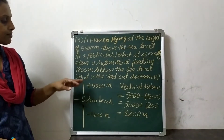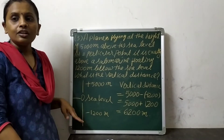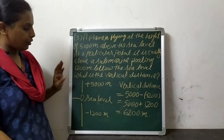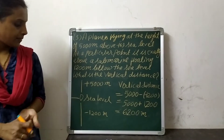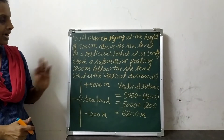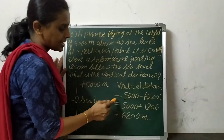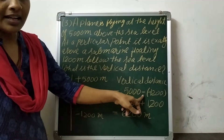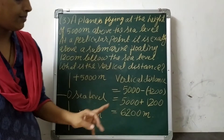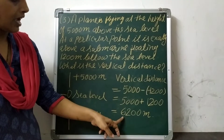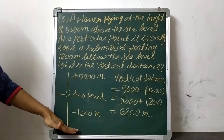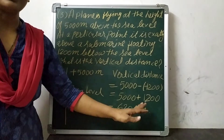Now we have to find out the distance between the plane and the submarine. When we have to find out distance, we will do subtraction. We will subtract the ending point from the starting point. So vertical distance is equal to 5000 minus minus 1200 meters. So 5000 meters plus 1200 meters is equal to 6200 meters. The vertical distance between the plane and the submarine is 6200 meters.